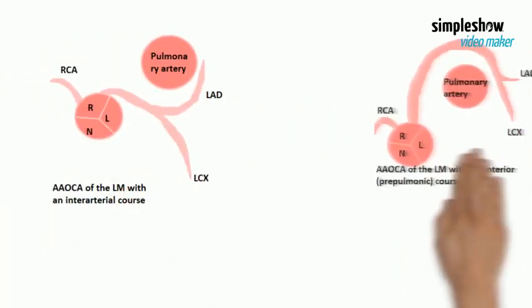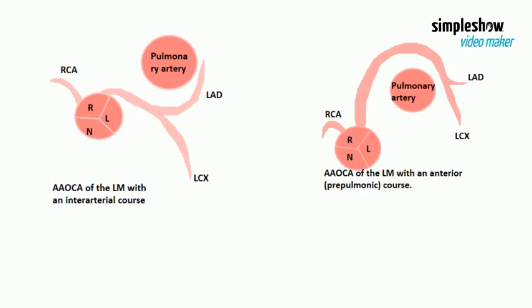In the intraarterial or pre-pulmonic course, the left main originates between the aorta and the pulmonary trunk. In this case it is rare and sometimes fatal.